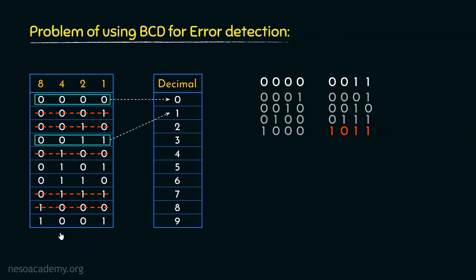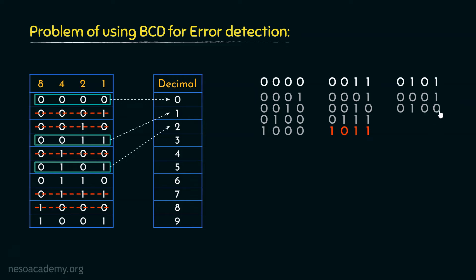The next pattern which can be assigned as a valid code is 0101, so let's assign that to symbol 2. For 0101, toggling each bit gives: 0001, 0100, 0111, and 1101. 0001 and 0100 are already invalidated due to the assignment of 0000 to symbol 0. 0111 is also already invalidated due to the assignment of 0011 to symbol 1. 1101 is again an invalid BCD code.